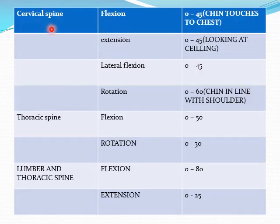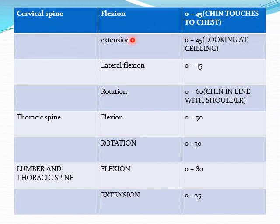For the spine — cervical spine, thoracic spine, and lumbar spine. Cervical spine movements: flexion, extension, lateral flexion, and rotation. Flexion: 0 to 45 degrees, when chin touches chest. Extension: 0 to 45 degrees, looking at the ceiling. Lateral flexion: 0 to 45 degrees. Rotation: 0 to 60 degrees, chin in line with the shoulder.